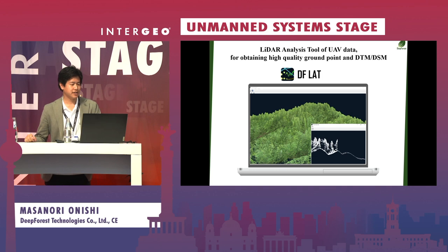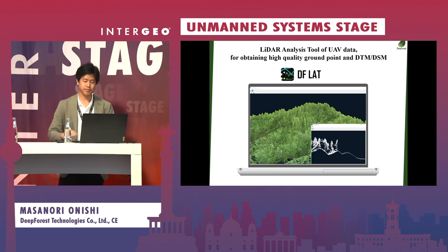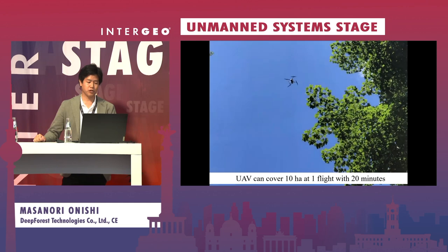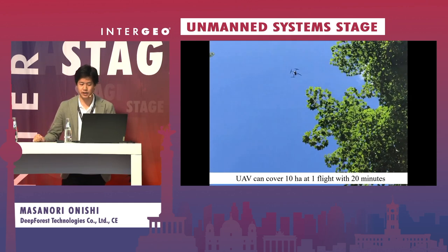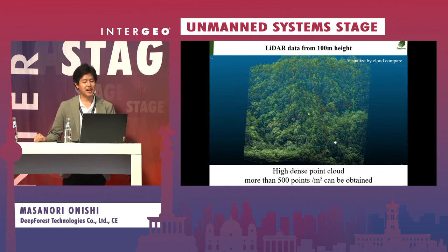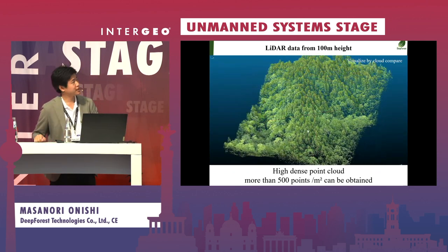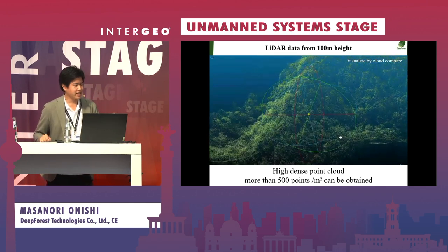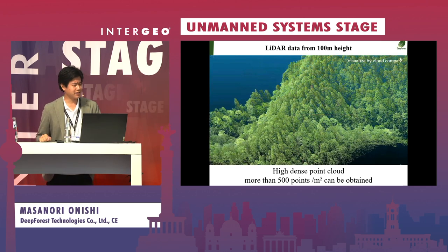DF-RAT is a LiDAR analysis tool for UAV data for obtaining high-quality ground points, DTM, and DSM. A UAV can cover, for example, 10 hectares in one 20-minute flight. This is demonstrated with the Zenmuse L1 laser from DJI. LiDAR data can be obtained like this — data taken from 100-meter height — and the result is a very high-density point cloud with more than 500 points per one-meter-by-one-meter area.